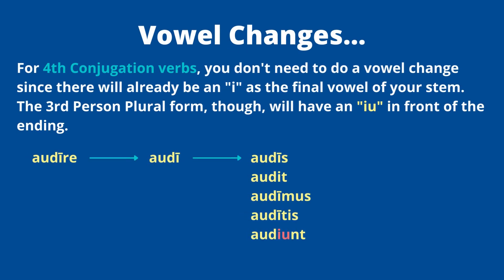The last conjugation is fourth conjugation, where the infinitive is '-ire.' Here you're not really doing a vowel change because you already have an 'i' as the final vowel of your stem. Take 'audio, audire' — dropping '-re' gives 'audi,' and there's already an 'i' there. The only thing to watch is the third person plural: just like with third -io verbs, you need 'i-u' in front of the '-nt' ending, giving '-iunt.' So adding endings to 'audi': audis, audit, audimus, auditis, audiunt.